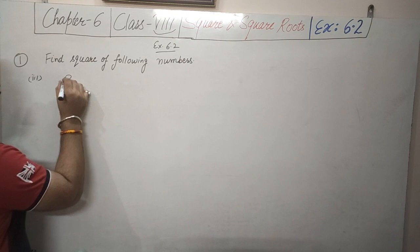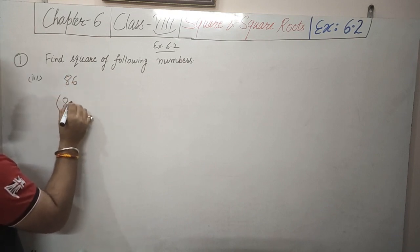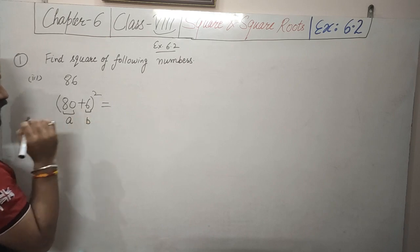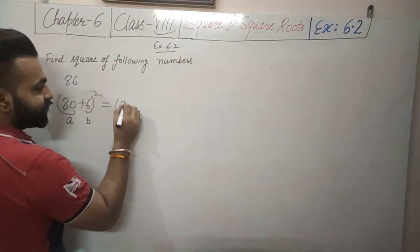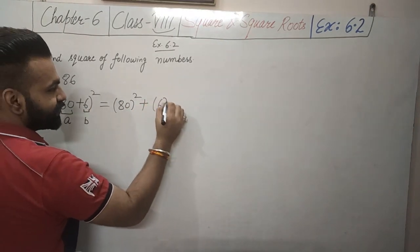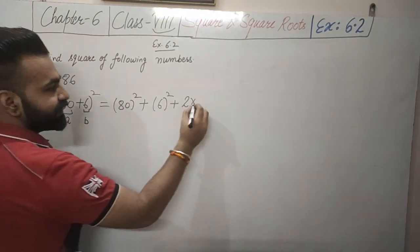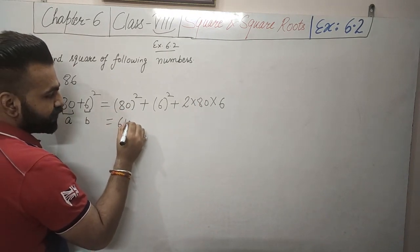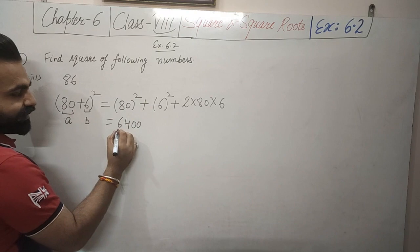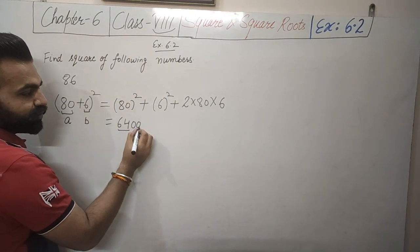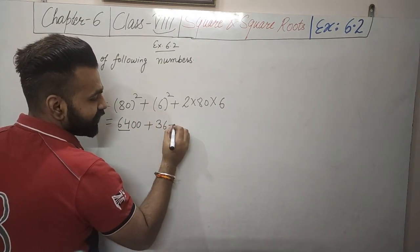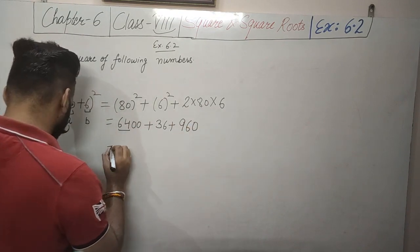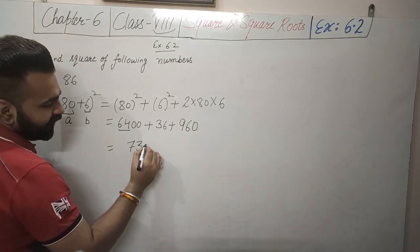Third part: 86 squared. We write 86 as 80 plus 6. So a is 80 and b is 6. This equals 80 squared plus 6 squared plus 2 into 80 into 6. Now 80 squared is 6400 (since 8 squared is 64 and the zero doubles on squaring), 6 squared is 36, and 2 into 6 is 12, and 12 into 80 is 960. Adding gives 7396.